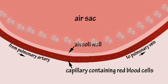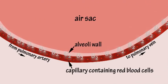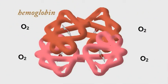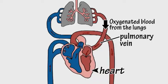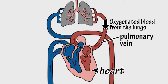By diffusion, oxygen enters into the blood where it bonds with hemoglobin. This oxygenated blood flows to the heart, which...